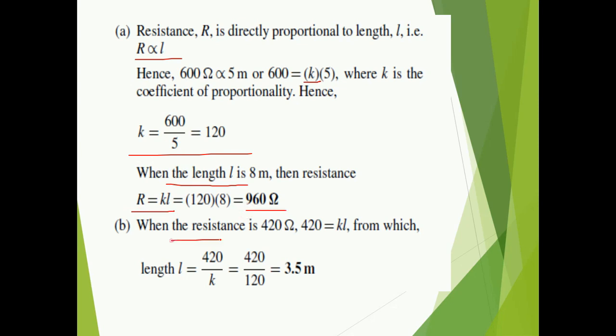In part B, the value of resistance is given and we need to calculate the length. So length comes out to be 420 divided by K, which is 3.5 meters.